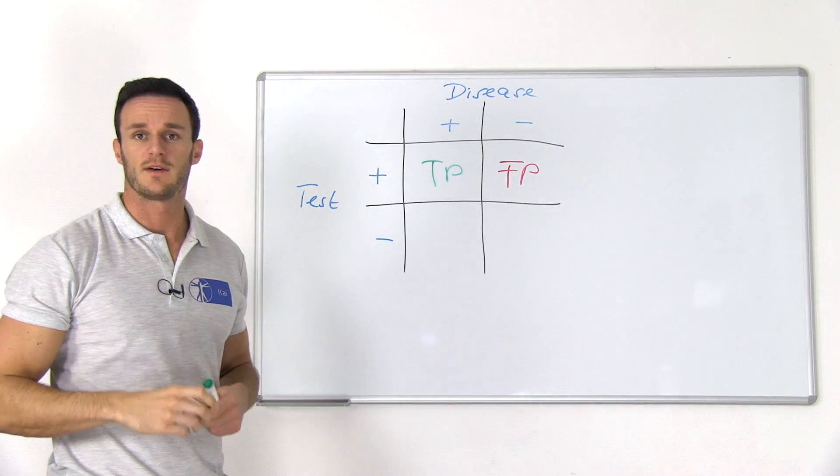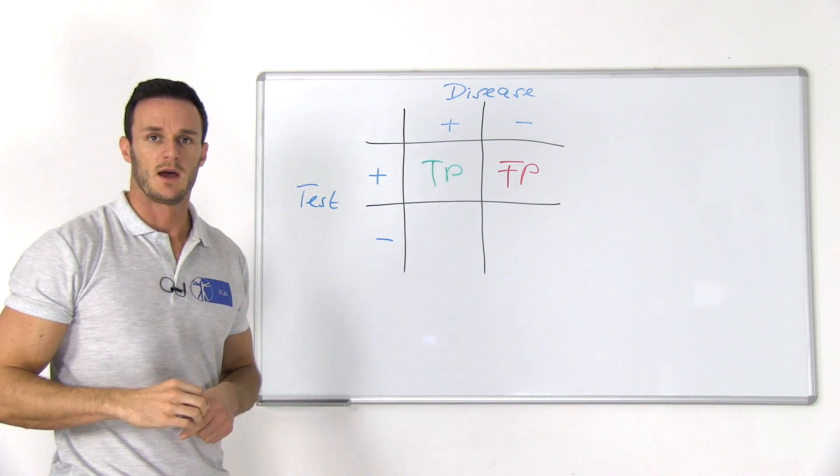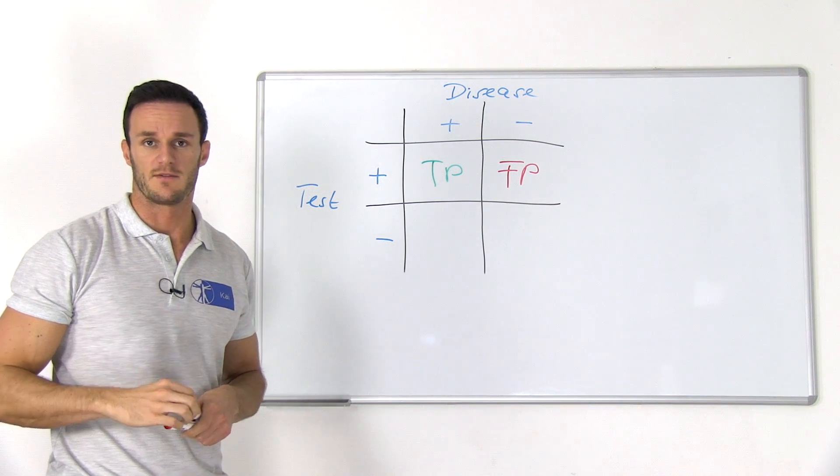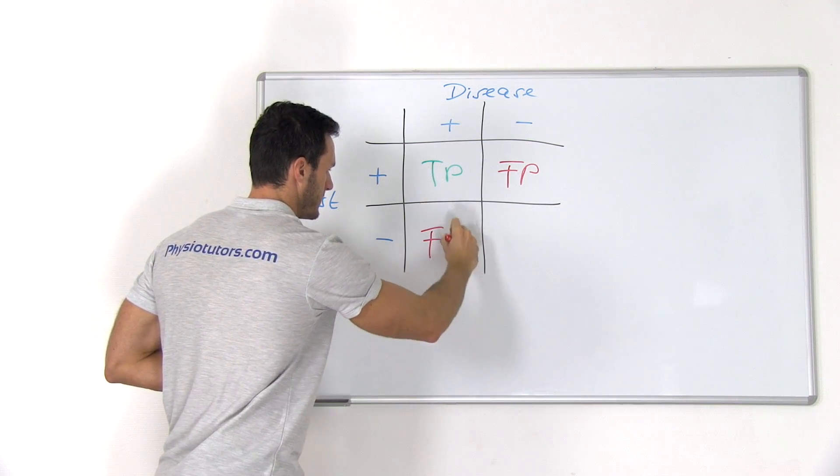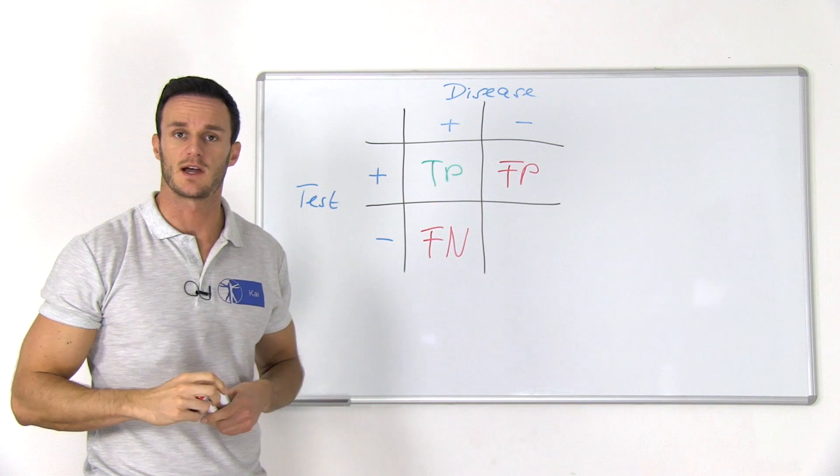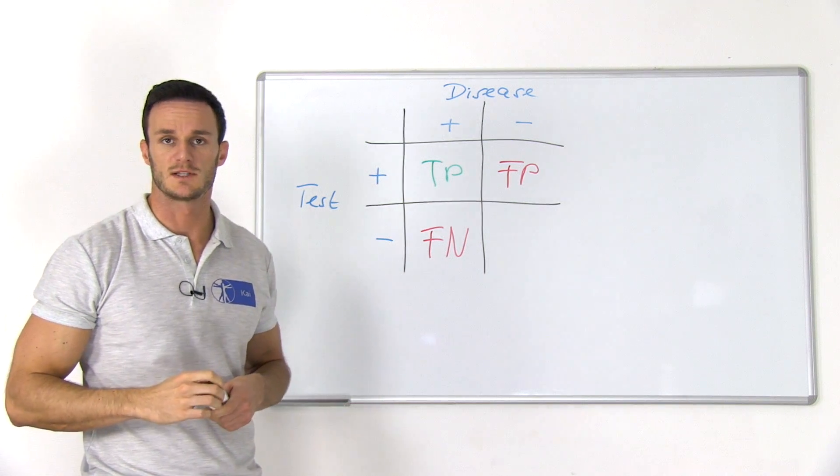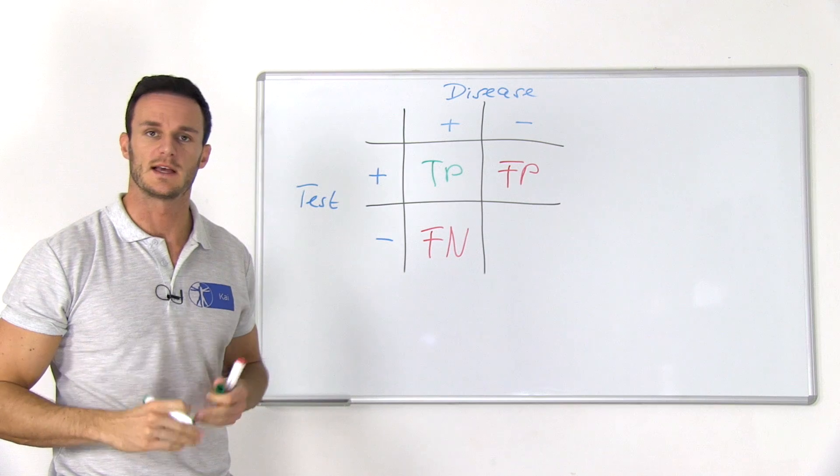Then we can also have a negative test outcome, but the patient actually has the disease, which we abbreviate as FN, false negative. And at last, we can have a negative test outcome, and the patient also does not have the disease, and we call that true negative, abbreviated as TN.